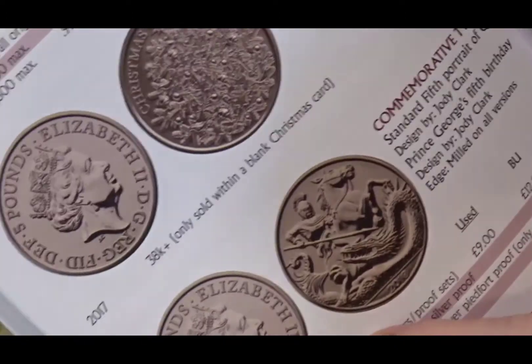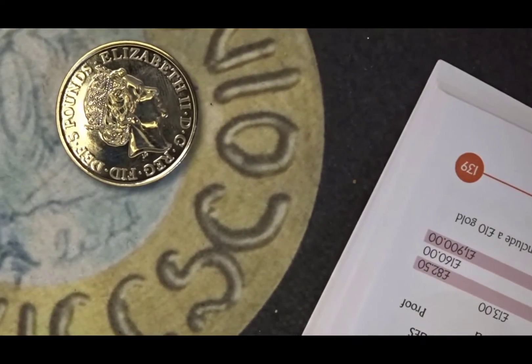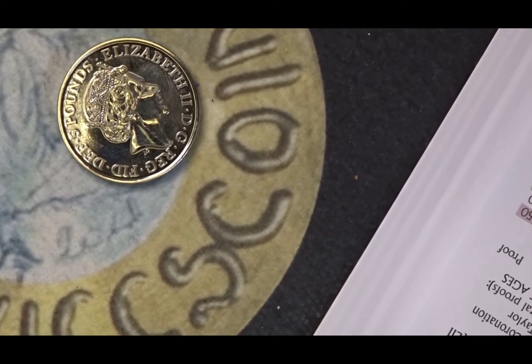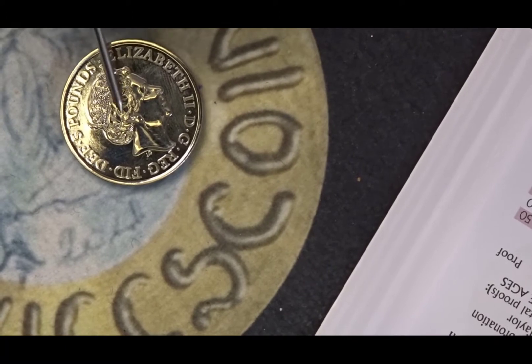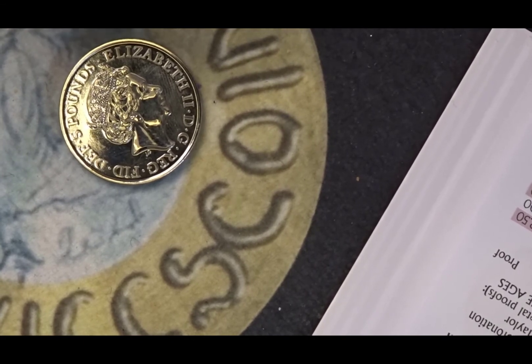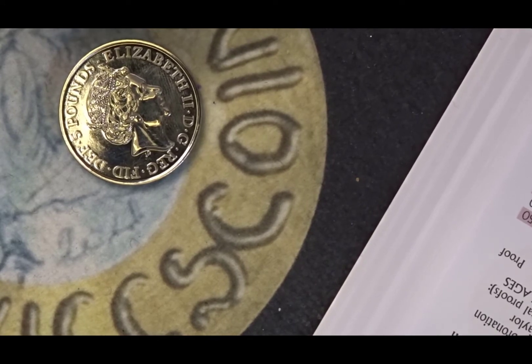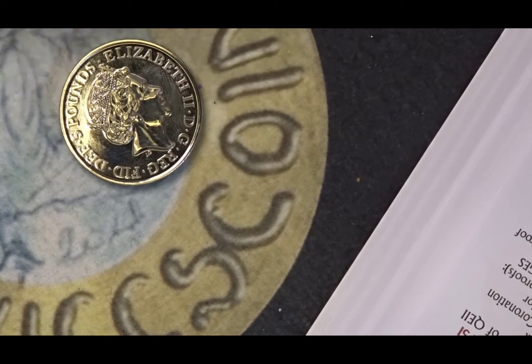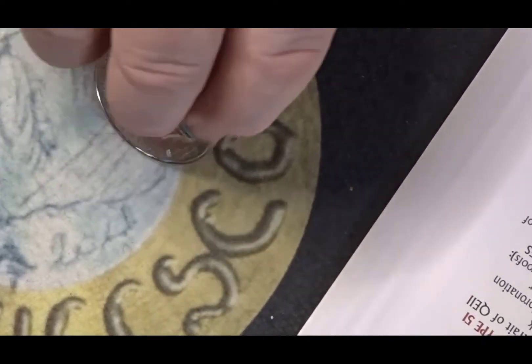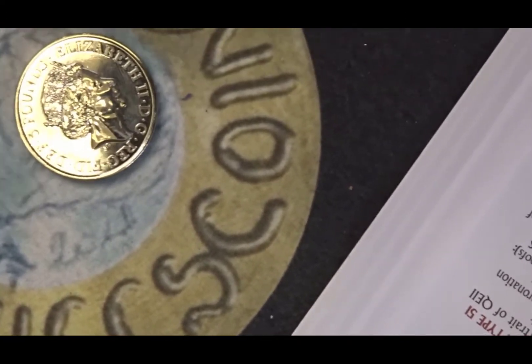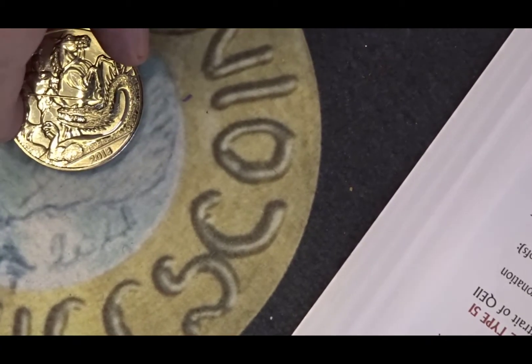Right, in the trusty book we have Prince George's coin there. It is commemorative type 49 from 2018. The designer of the coin, both the Queen's portrait and the reverse side, is Jodie Clarke. This particular coin was produced for Prince George's fifth birthday. We have the JC portrait here, fifth portrait of the Queen, and over on this side we have the reverse.